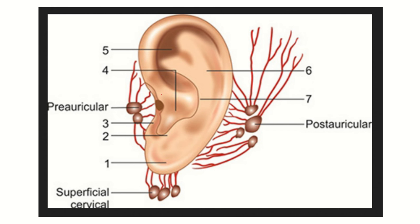In the second picture, we can see the anterior part drains to the preauricular nodes, and almost all of the posterior part drains to the post-auricular and occipital nodes. And this part — the ear lobule in our question — drains into the superficial cervical lymph node.